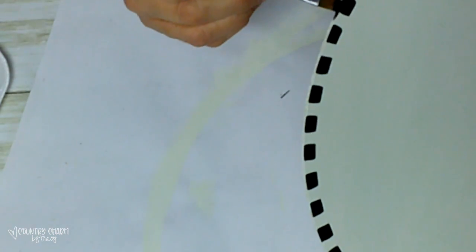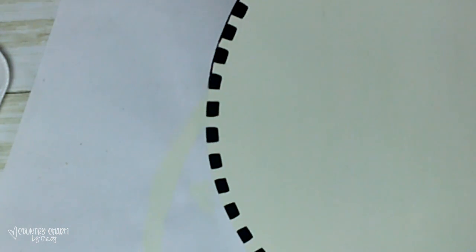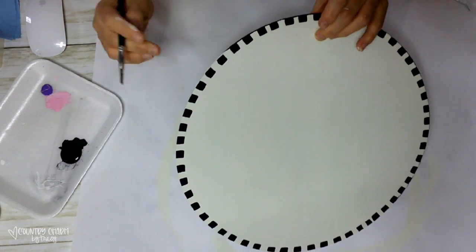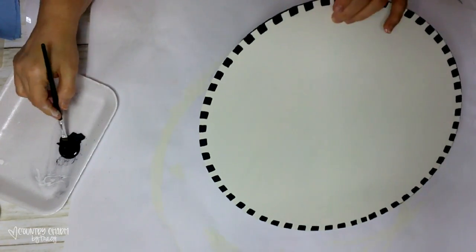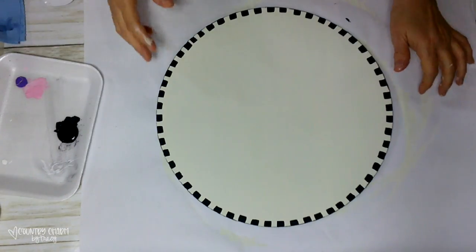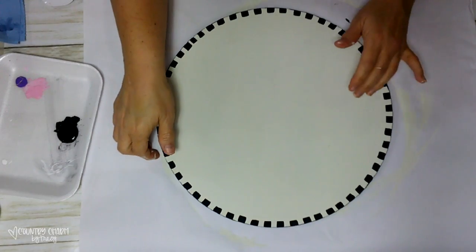But usually what I do is if I get my stripes or my checkerboard a little too close, I'll just go back in with the paint and clean it up a bit. And I just take my brush and just paint around the edge of it to make sure that it has black around the edges.